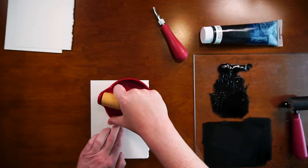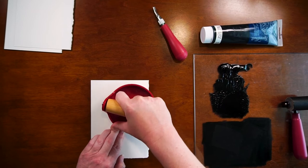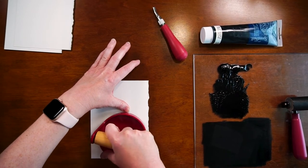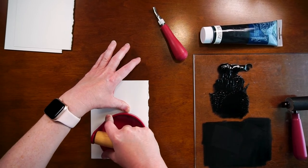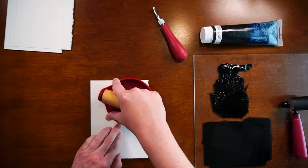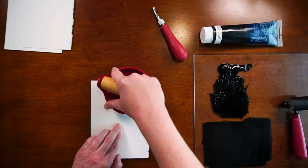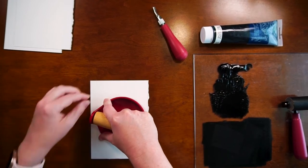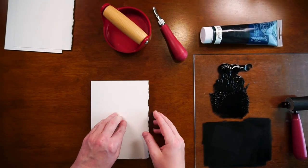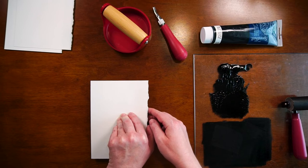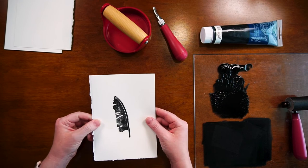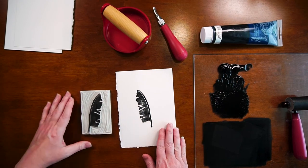Because you don't want it to shift or else you'll get a smudgy print. Now you take your baron and you use that to press it down. Again being careful because you don't want to shift the paper and you want to make sure that you're getting pressure everywhere that you have ink. Now you never quite know what you're going to get. Sometimes the first print isn't the best print but here we go. Let's take a look.